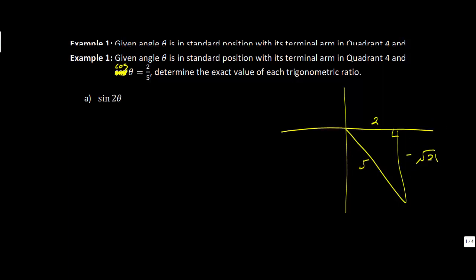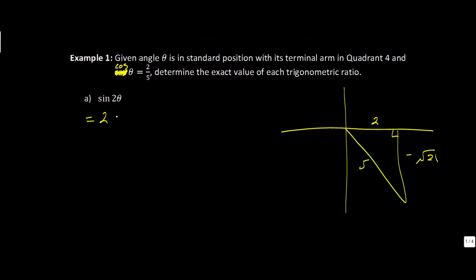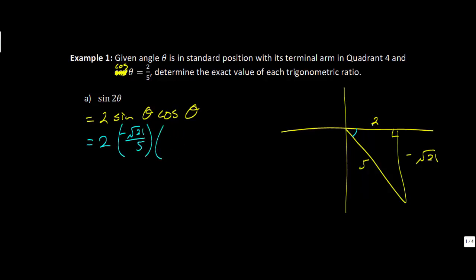Using the sine 2θ identity, we can say that sin 2θ equals 2 sin θ cos θ. Now substituting the values from our triangle: the 2 stays the same, sine of theta is negative root 21 over 5 — that's opposite over hypotenuse — and cosine of theta is 2 over 5, adjacent over hypotenuse. Simplifying, we have 2 times 2 in the numerator giving a negative 4, and then square root of 21 all over 25.